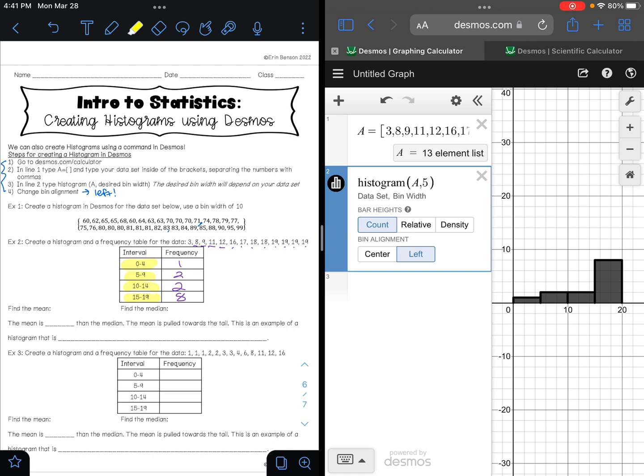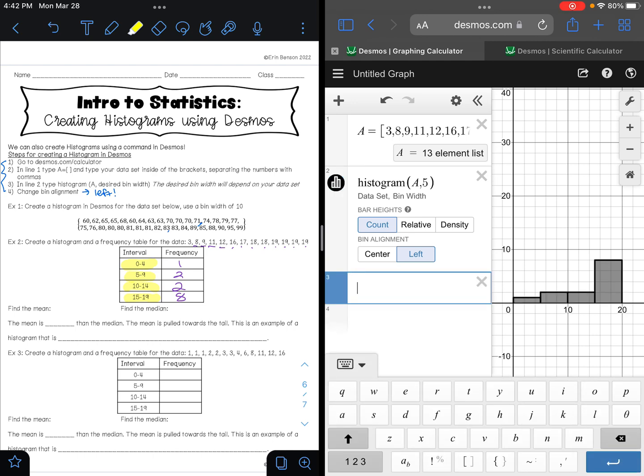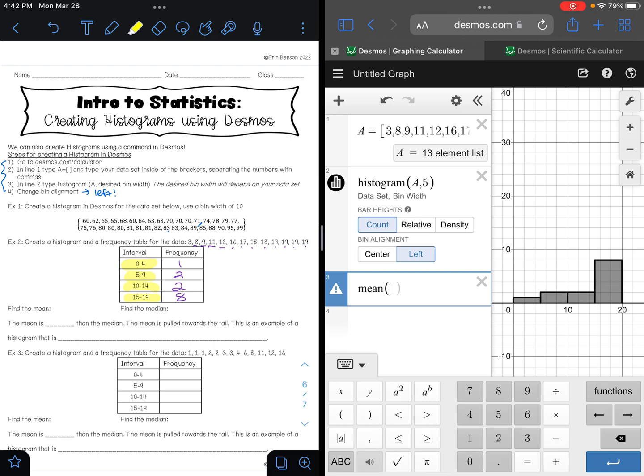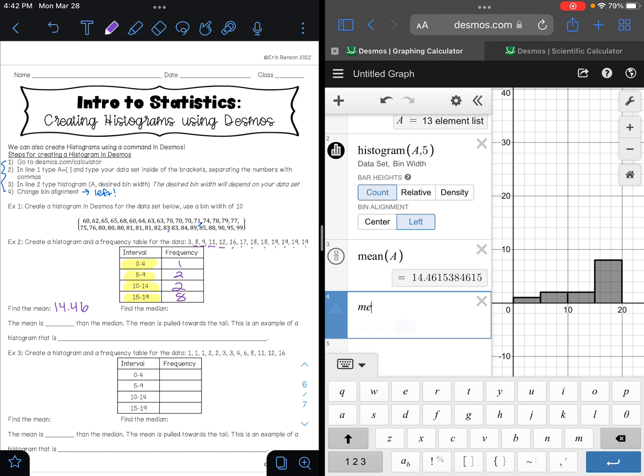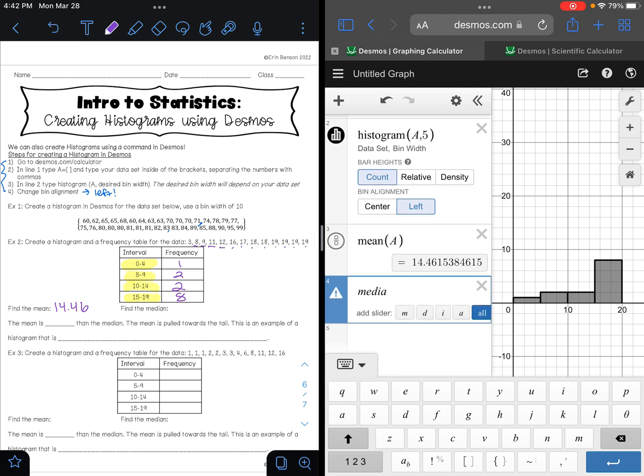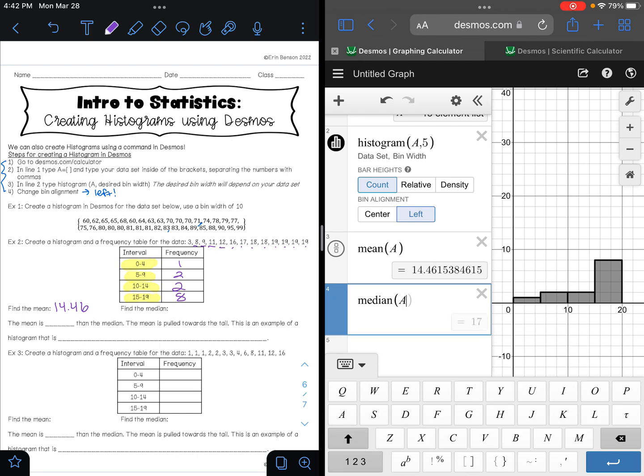Then they ask me to find my mean, so I can find my mean by just typing it in. So mean, and I want to find the mean of list A, and we get 14.46. And then they want me to find the median. Well you could type in your stats here or you could just type in median and it will calculate it for you. So our median of list A is 17.